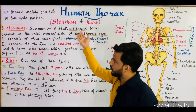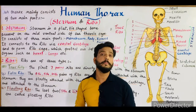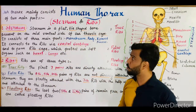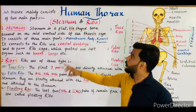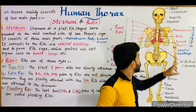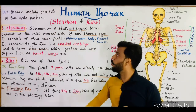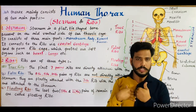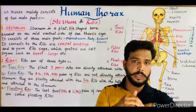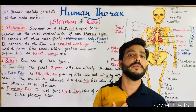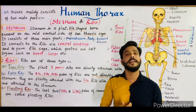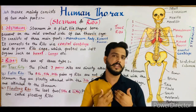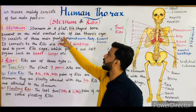Now I will tell you about these bones in theory. The thorax mainly consists of two main parts: the sternum and the ribs. First, the sternum. A sternum is a flat tie-shaped bone. It is present on the mid-ventral side of the thoracic cage. In our body we have a dorsal side and a ventral side, and the sternum is present at the midline on the ventral side.